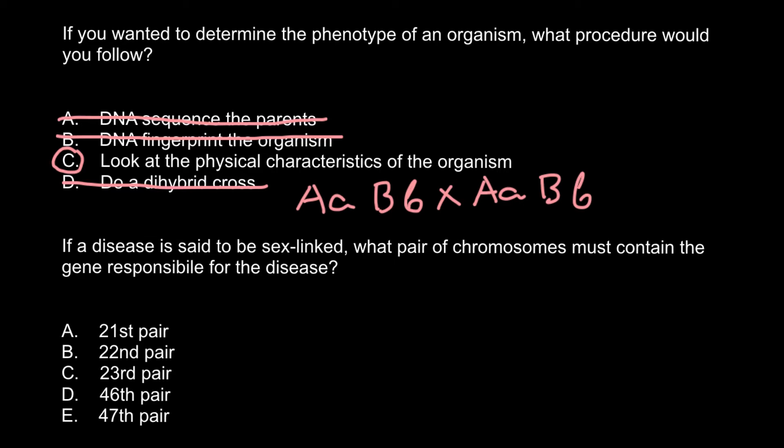Genotype would be the DNA sequence of the organism. It's not necessary to refer genotype to the whole sequence — sometimes we refer to just one or two genes. For example, this is going to be the genotype of one organism, and the genotype of another organism can be the same or different. We also call this genotype. So, next question.